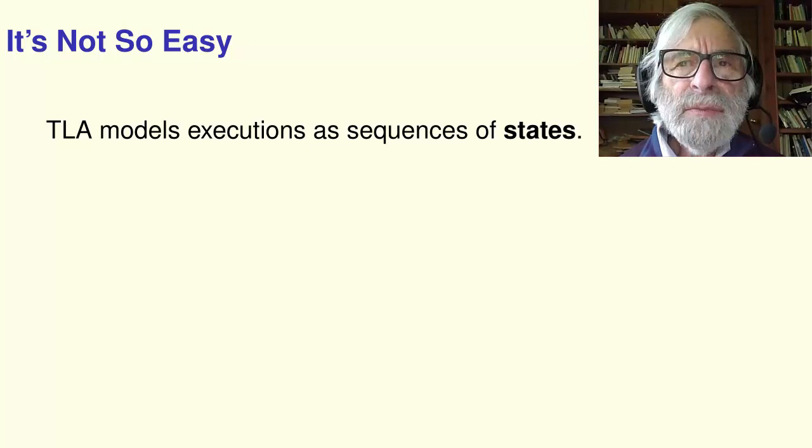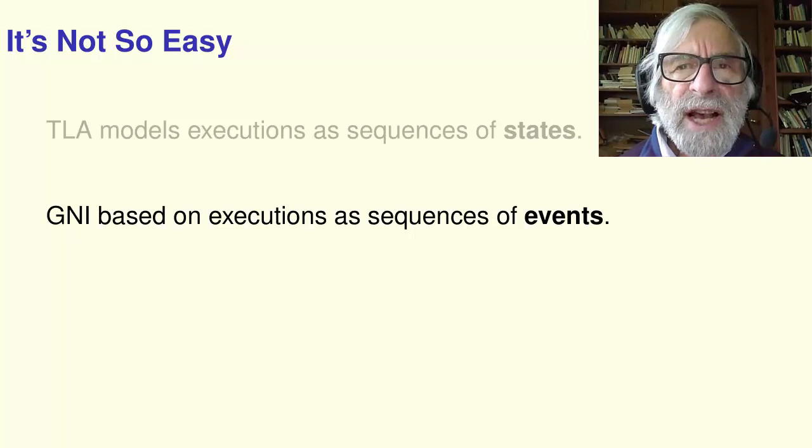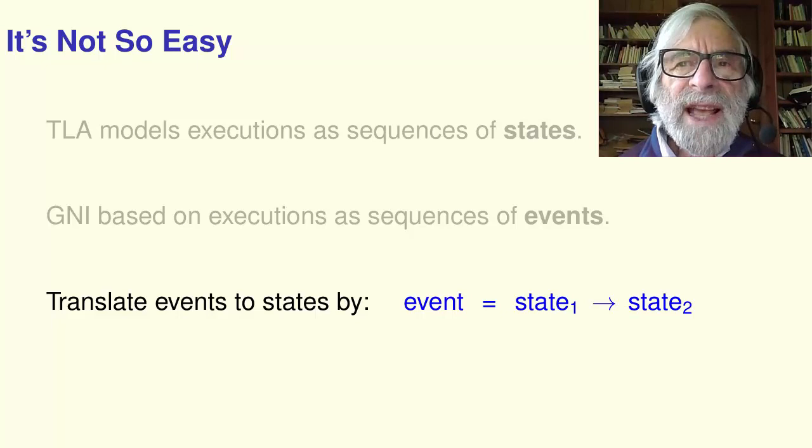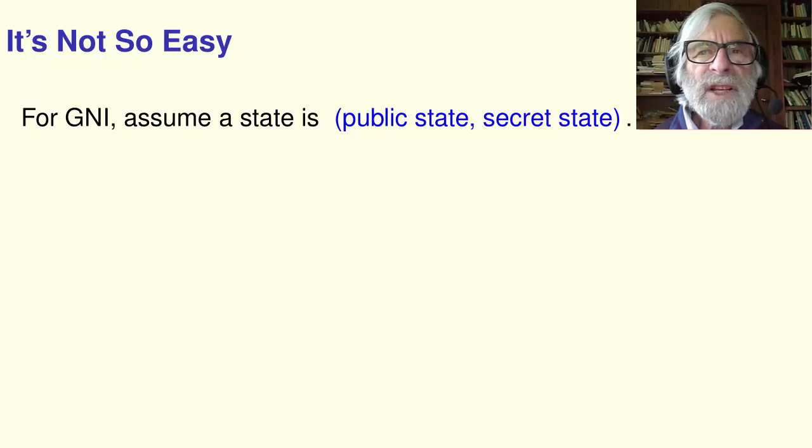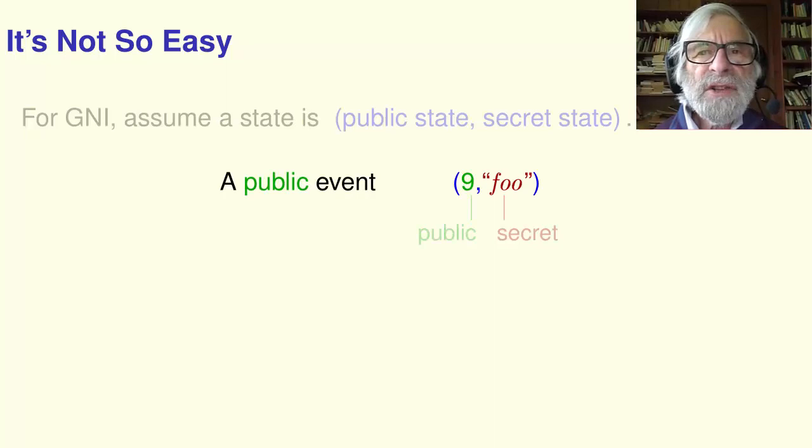Unfortunately, expressing GNI is not this easy. TLA, like most temporal logics, models a system execution as a sequence of states. GNI, and some other security hyperproperties, were originally described in terms of executions as sequences of events. To translate from events to states, we model an event as a change of state. To translate GNI, we assume a state is a public state secret state pair, like this. A public event is one that changes the public state. A secret event is one that changes the secret state.